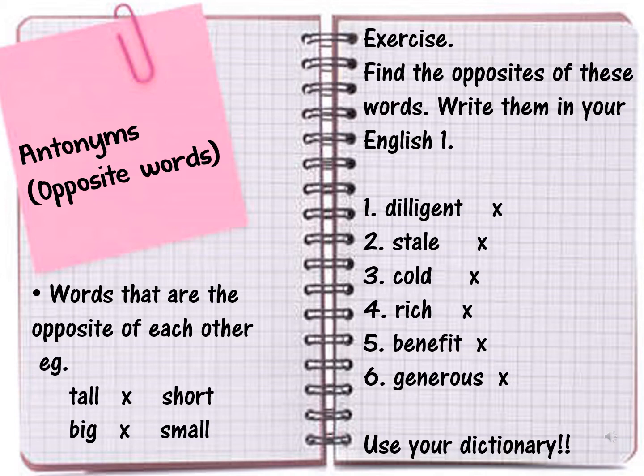Pause this video. Number 1: diligent. Number 2: stale. Number 3: cold. Number 4: rich. Number 5: benefit. Number 6: generous. Before you find the antonym — sebelum kamu cari antonymnya, perkataan yang berlawan — you'll find the meaning of these words first. Let's cari dulu maksud enam perkataan ini.